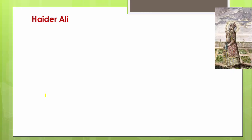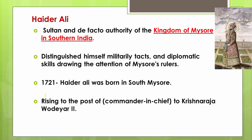Haider Ali was the sultan and de facto authority of the kingdom of Mysore in southern India. He was very capable, with distinguished military skills and diplomatic abilities that drew the attention of the Mysore rulers. He was born in 1721 in southern Mysore, at a place known as Budi Court of the Polar district in Mysore.